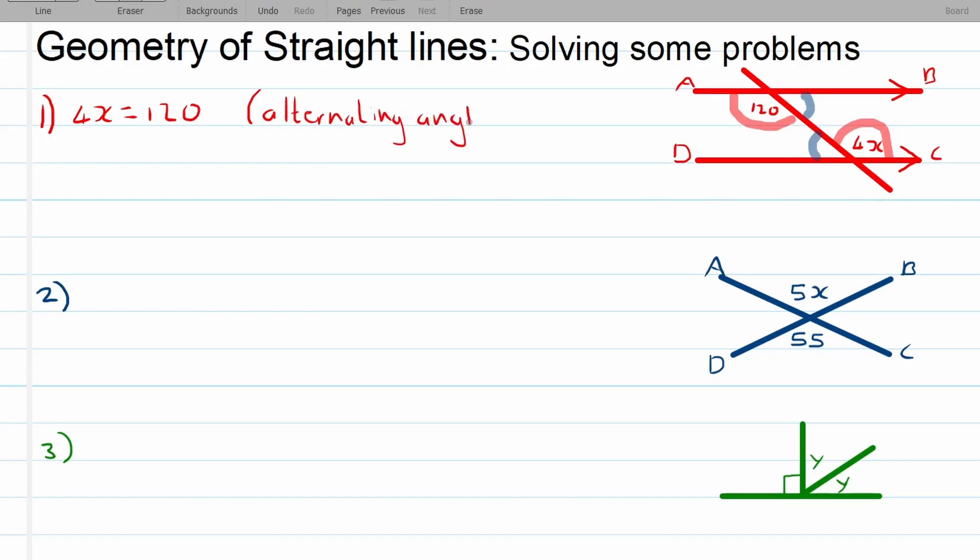Why can we say alternating angles? Because we've got parallel lines. You say AB parallel to DC. Now the next step is just to do the calculations of 4x and 120. So we are dividing by 4 on both sides.